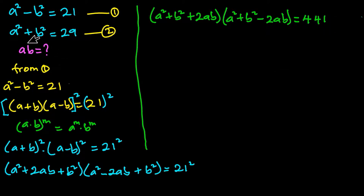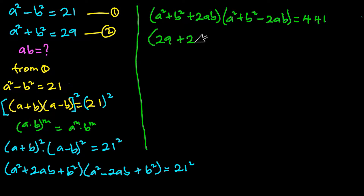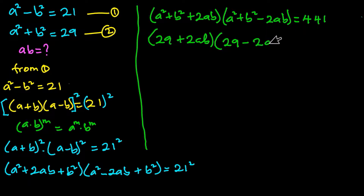From equation 2 we know that a squared plus b squared equals 29. So in place of a squared plus b squared I can substitute 29. We have 29 plus 2ab times 29 minus 2ab, and this is equal to 441.